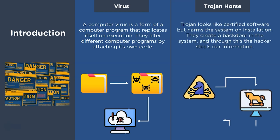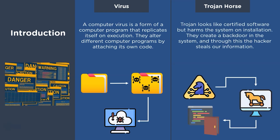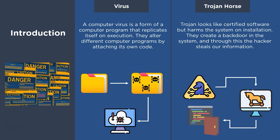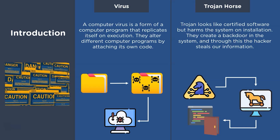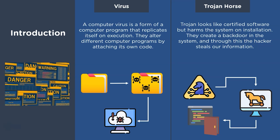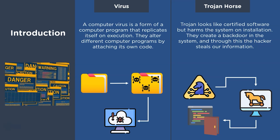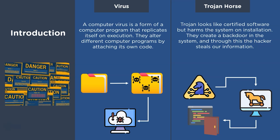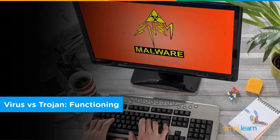A trojan horse program is a program that disguises itself as a legitimate program but harms the system on installation. Trojans hide within attachments and emails, then transfer from one system to another. They create backdoors into a system to allow the cyber criminal to steal our information.